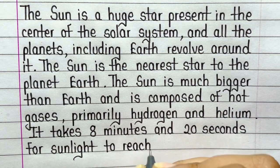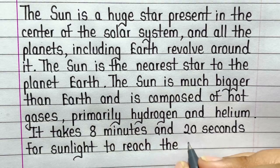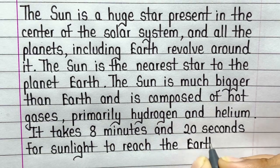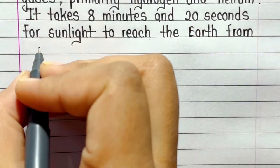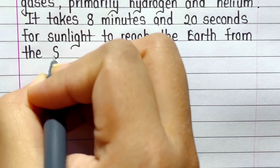The Sun is much bigger than Earth and is composed of hot gases, primarily hydrogen and helium. It takes 8 minutes and 20 seconds for sunlight to reach the Earth from the Sun.